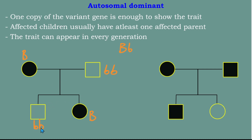The son also has recessive alleles. Because the son has recessive alleles, that means the mother must be heterozygous — she has one capital B and one small b. The son gets one gene from the mother and one from the father, giving him homozygous recessive (bb). The daughter gets one dominant allele from her mother and one recessive from her father, making her Bb.